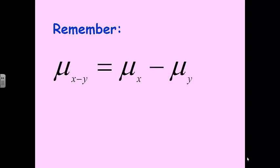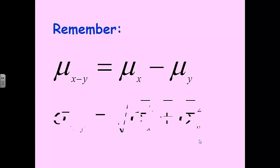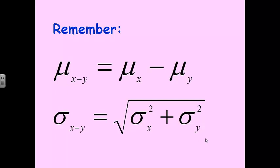Remember way back in your memory — when we're subtracting two groups, two means, and we want to calculate a brand new mean, the mean of x minus y, we can simply subtract the mean of x minus the mean of y. Means are easy; they behave exactly the way you would expect. Standard deviations, however, do not. If we're trying to subtract two standard deviations, we can't just subtract them. Instead, we have to square them, add them together, and then take the square root. Hopefully these two formulas are jogging some brain cells for you.